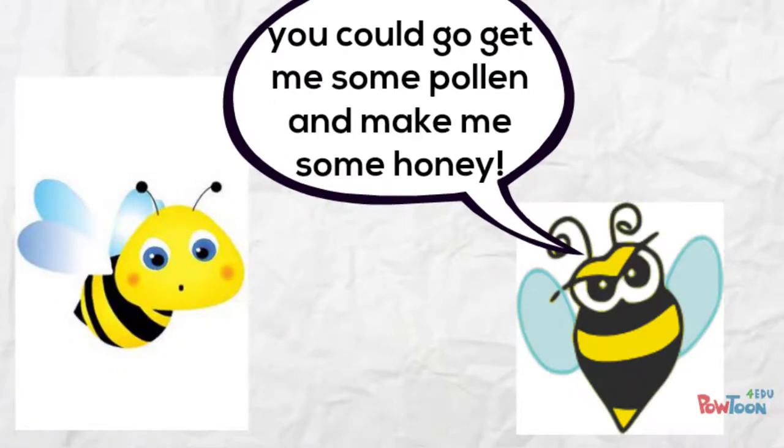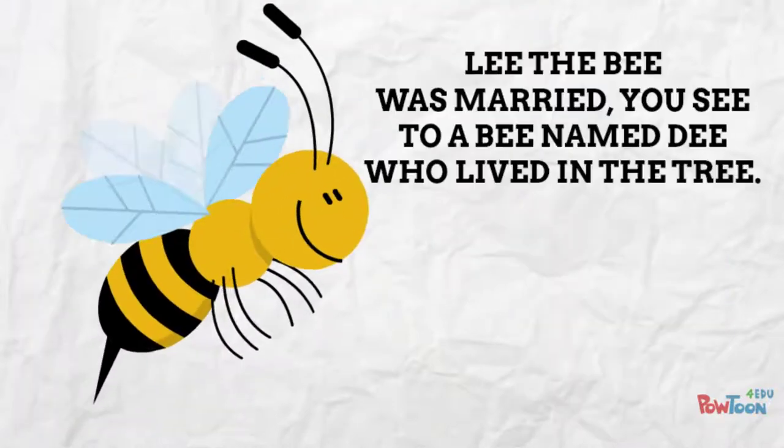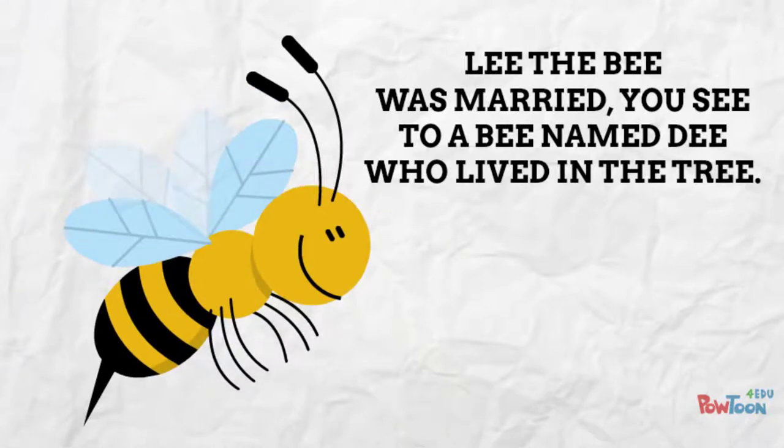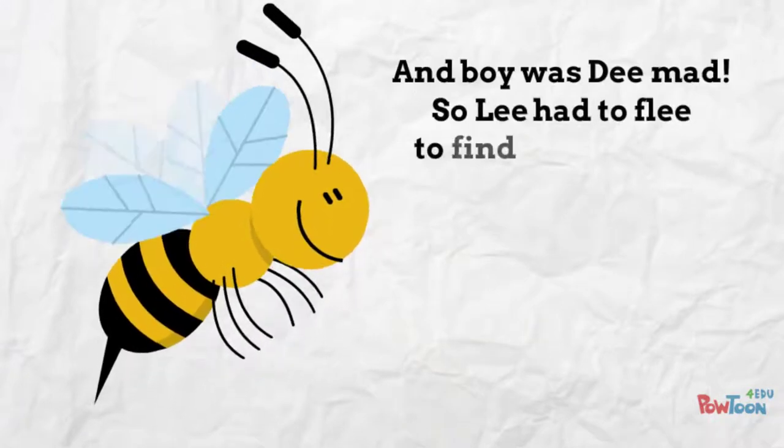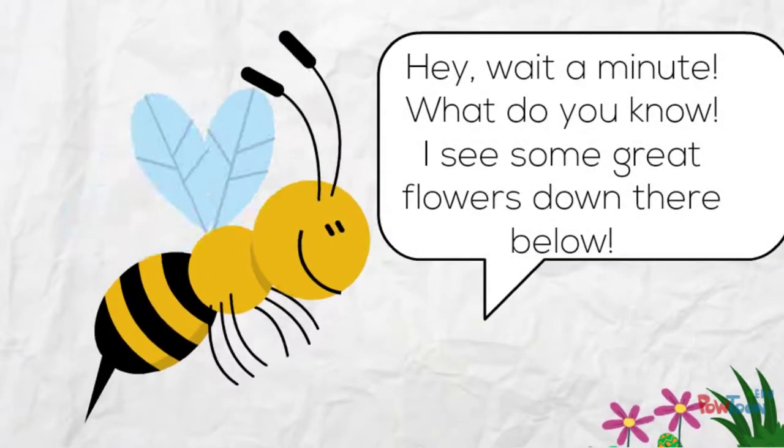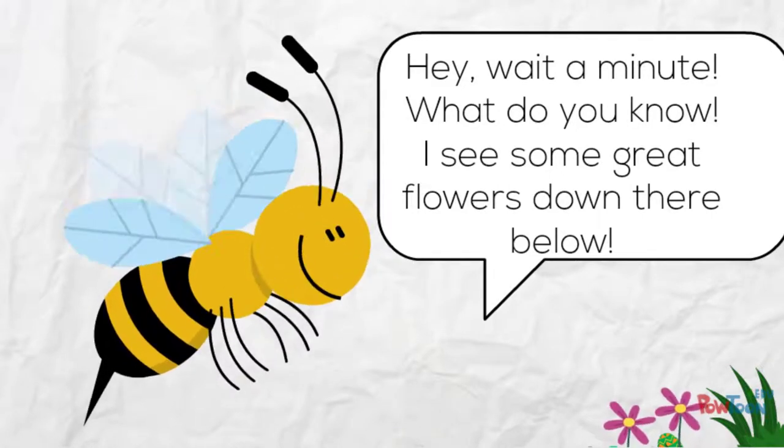Yes dear. Lee the bee was married, you see, to a bee named D who lived in a tree, and boy was D mad. So Lee had to flee to find some pollen to make some honey. Hey, wait a minute, what do you know! I see some great flowers down there below.